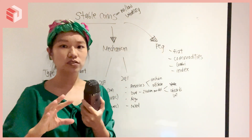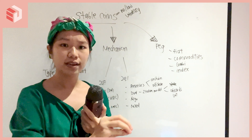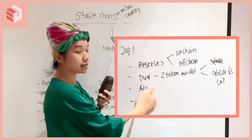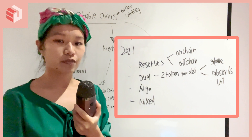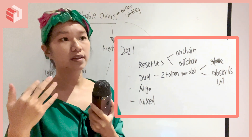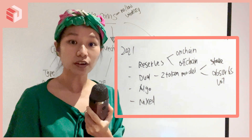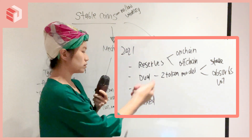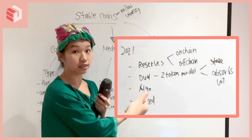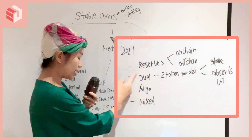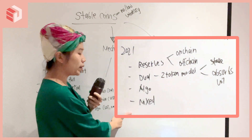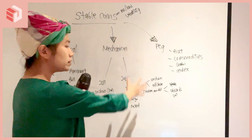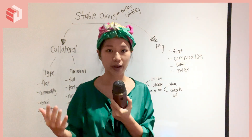The fourth mechanism is mixed — a combination of two or all of them. It's important to note that these mechanisms do not exist alone; they can coexist in one stablecoin's creation. You could mix them up because they serve different purposes and hedge against volatility in different ways. Because of that, we have four mechanisms in 2021.